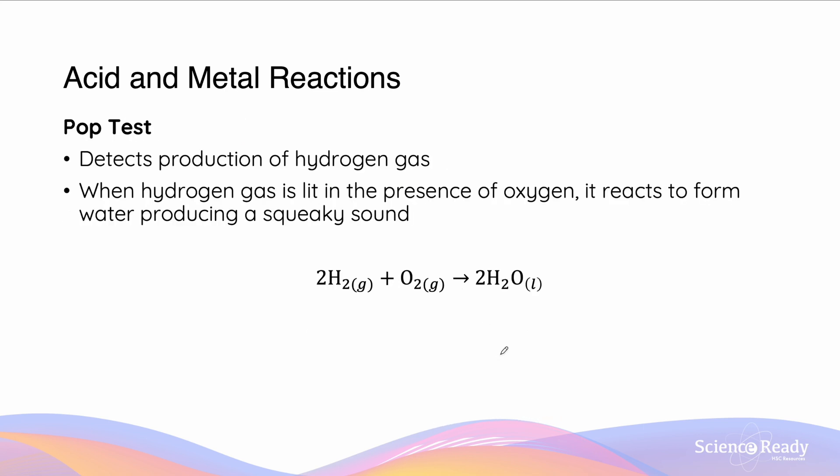So how can we test for an acid metal reaction? Well, we get the formation of hydrogen gas and we're able to test for this by doing the pop test. This is where we light the hydrogen gas being produced by the reaction, and in the presence of oxygen it will react to form water, which is a highly exothermic reaction, and this is why we get a production of a squeaking sound.